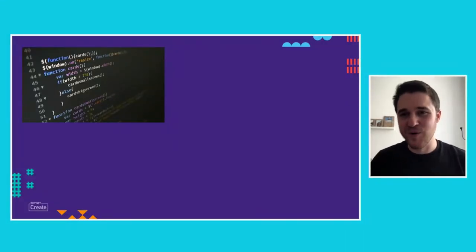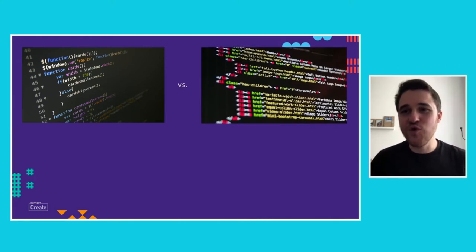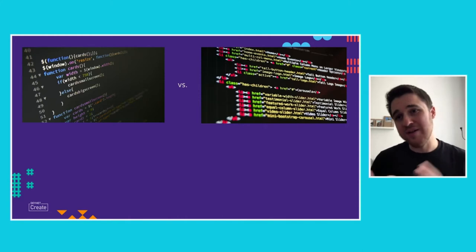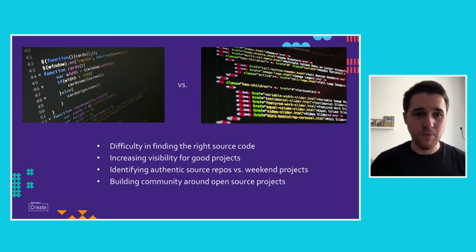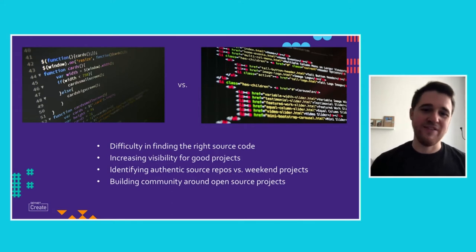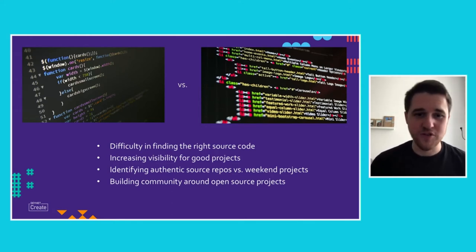And this is exactly what the DevNet Code Exchange is about. It will help you find the right source code — you can filter with programming language, filter with some really cool technologies, and there's also a starring or ranking system that makes good projects and repositories visible.